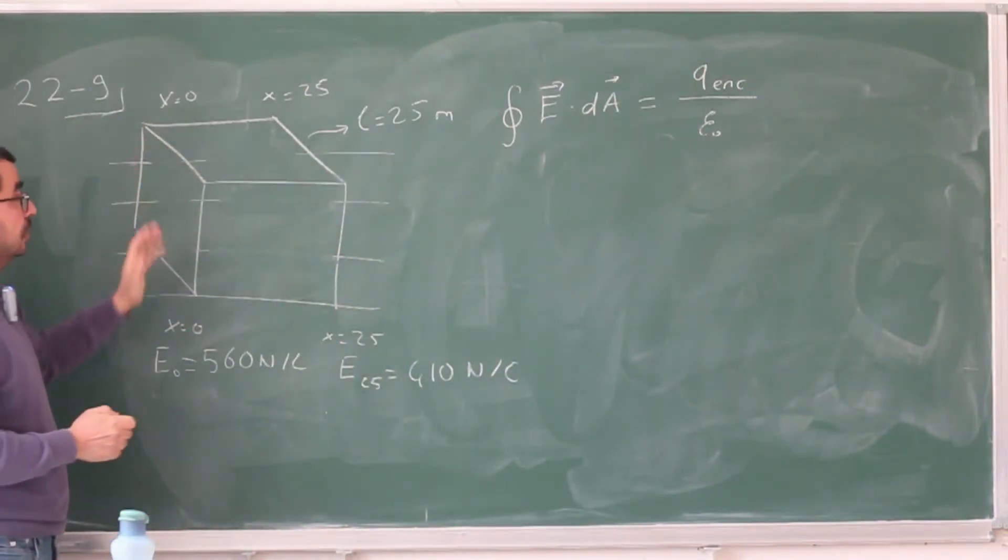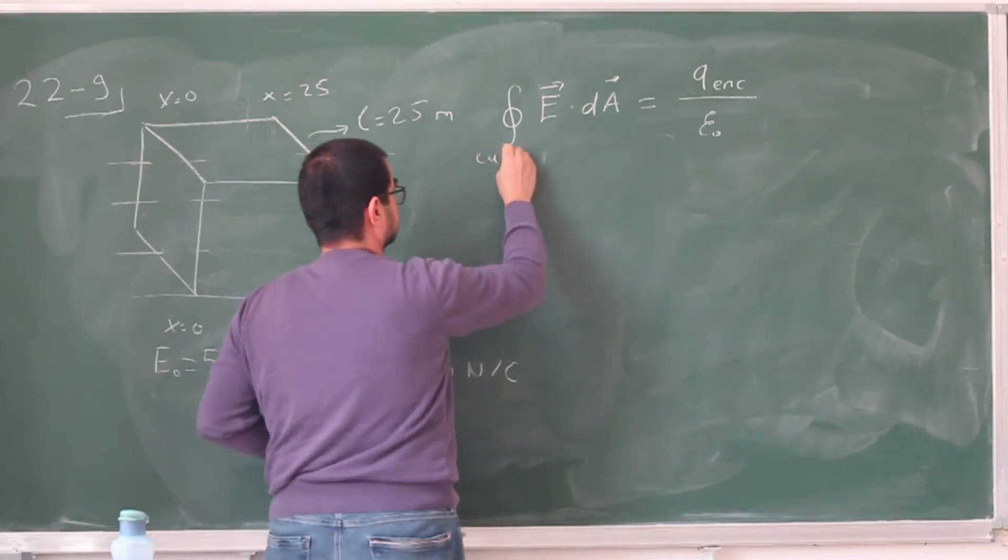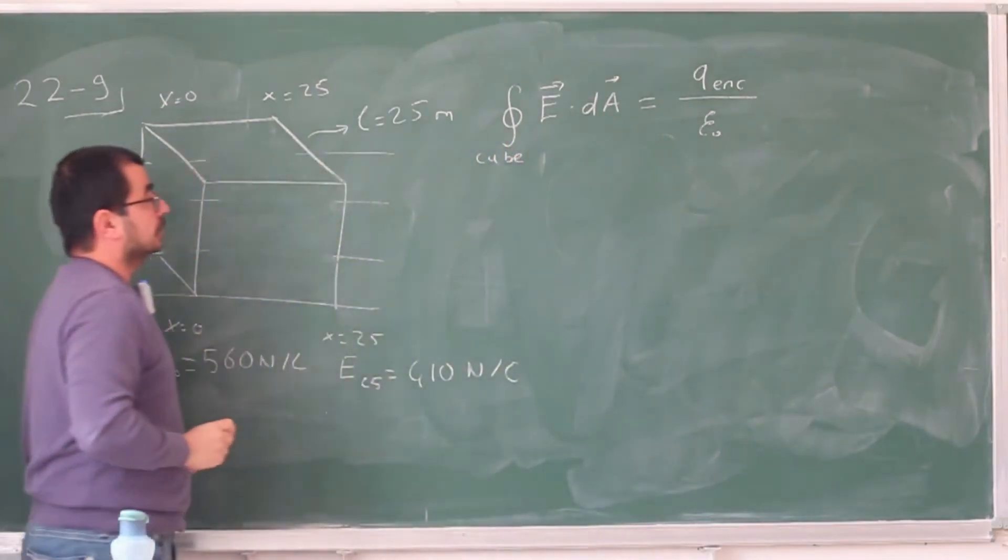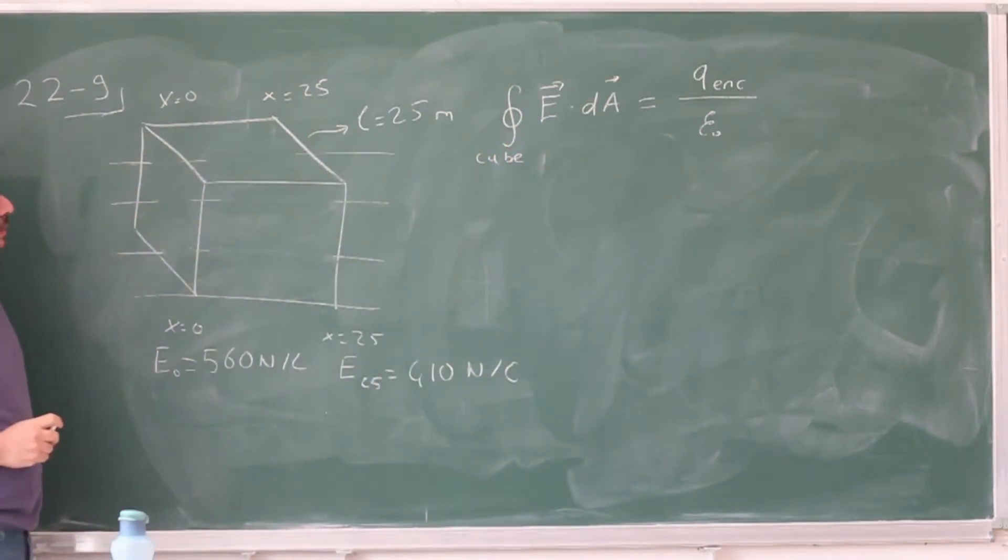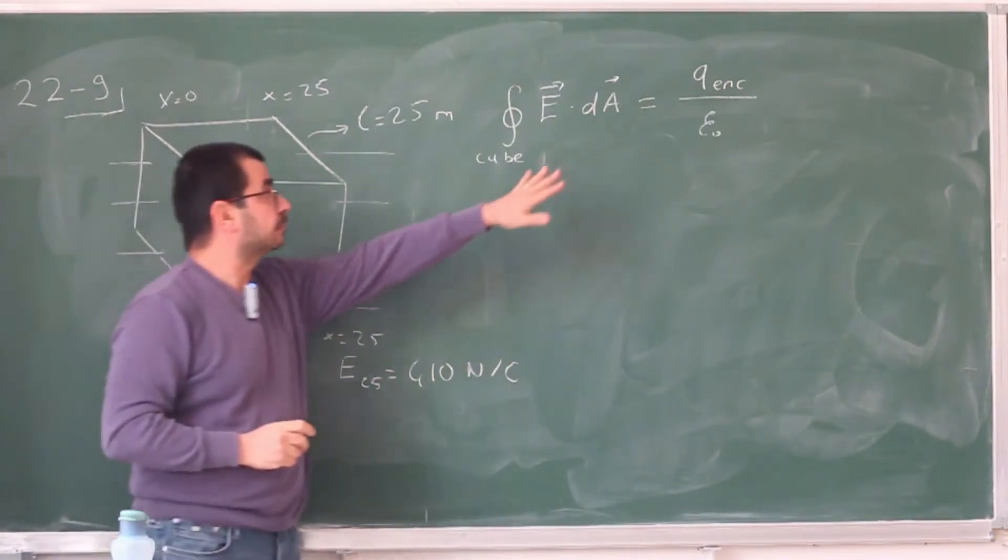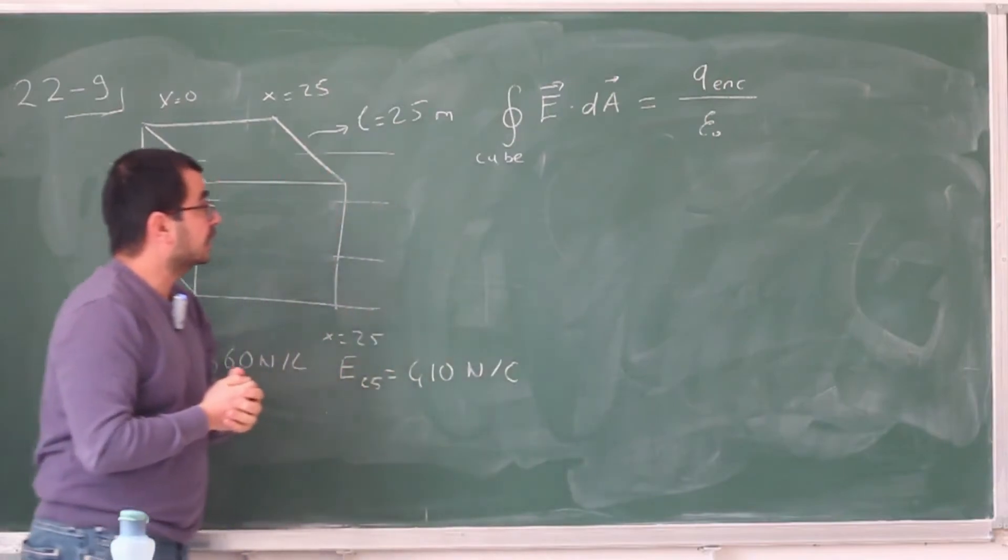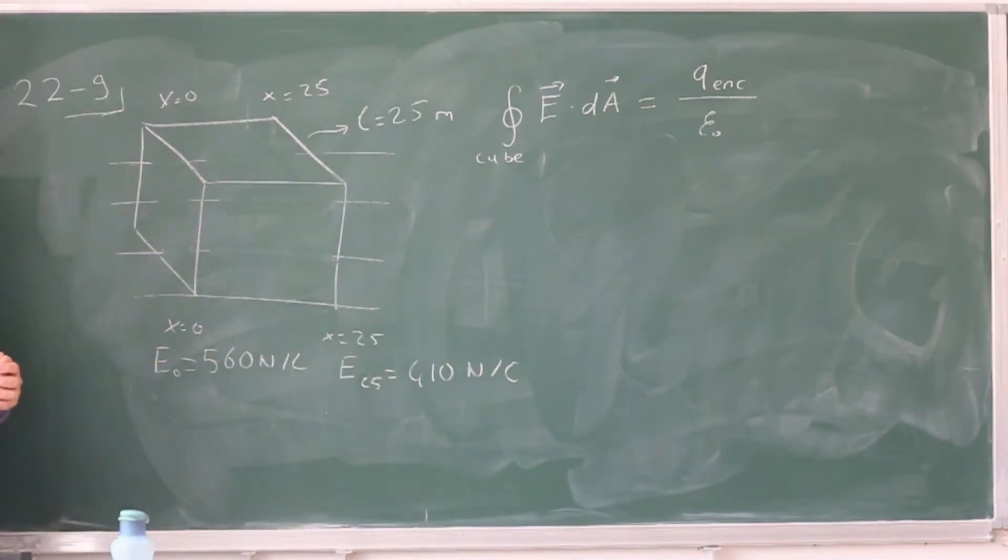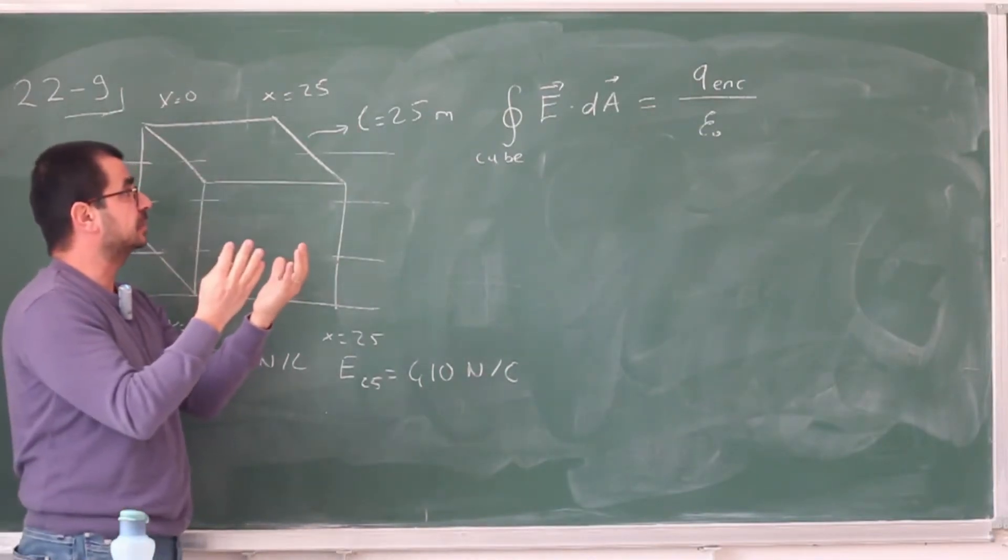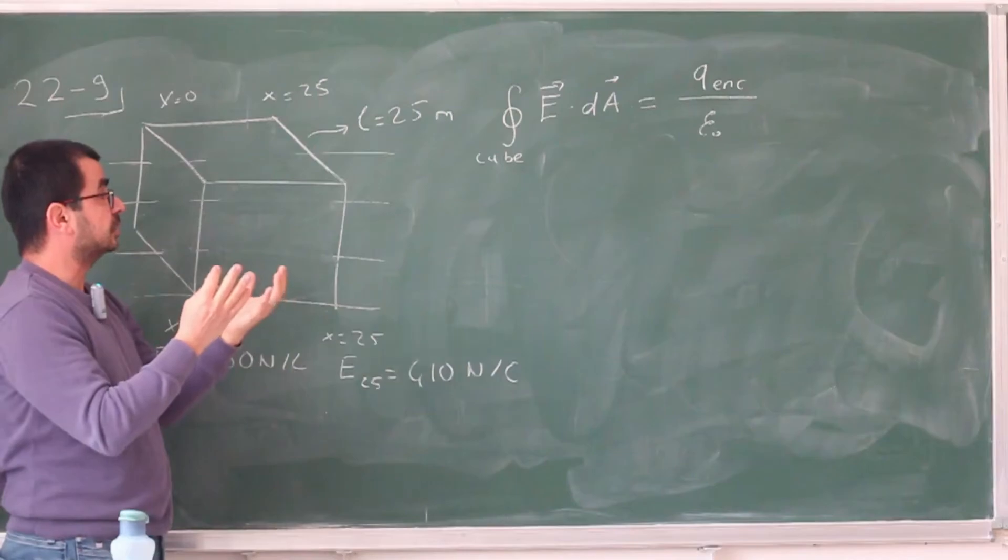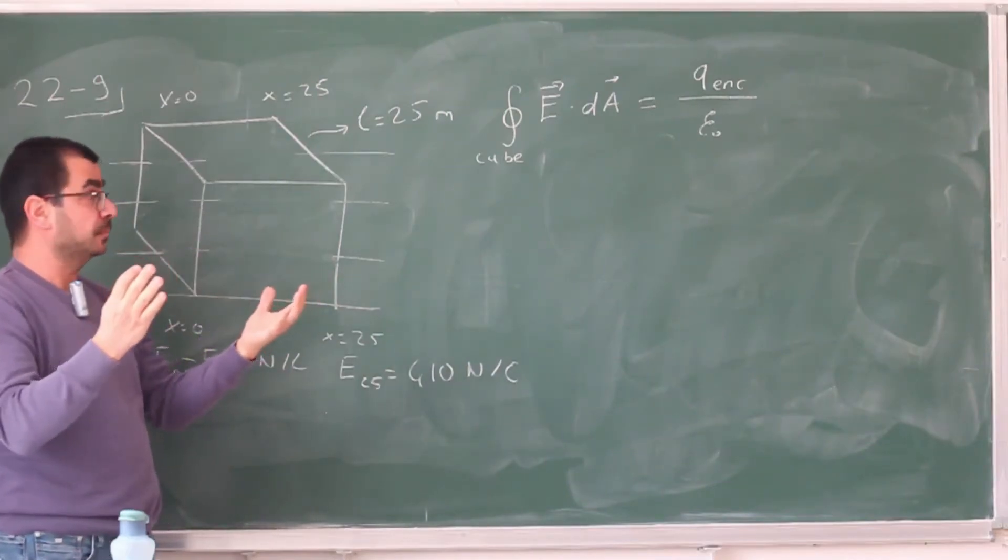So in this case, the surface is over our cube. And so to calculate this integral, we need to come up with some dAs. And what does this dA look like? So remember, for a simple closed surface, this infinitesimal area element will have a direction. And that direction, we have chosen it to be outward.